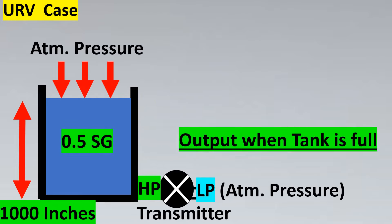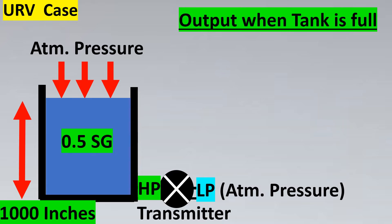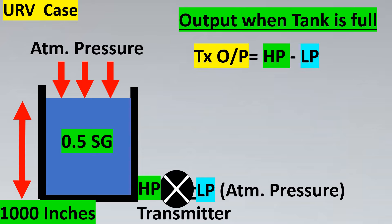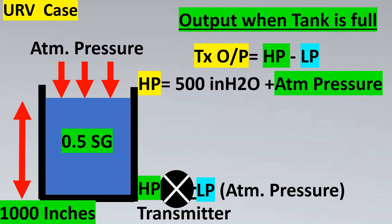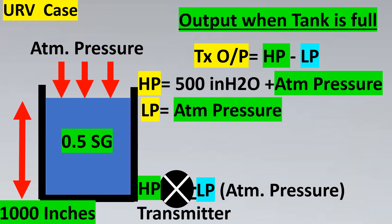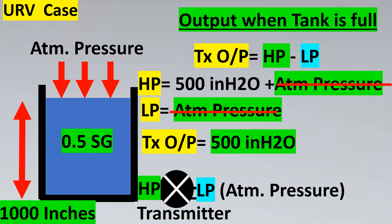To confirm: the transmitter output when the tank is full is HP minus LP. HP was 500 inches of H2O plus atmospheric pressure; LP was atmospheric pressure. The atmospheric pressure cancels, so the transmitter output is 500 inches of H2O when the tank is full.